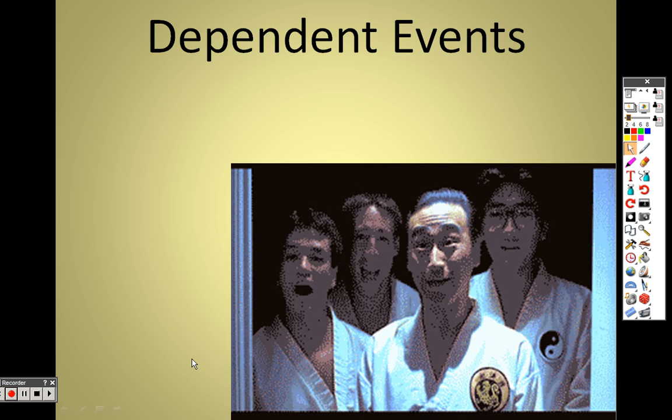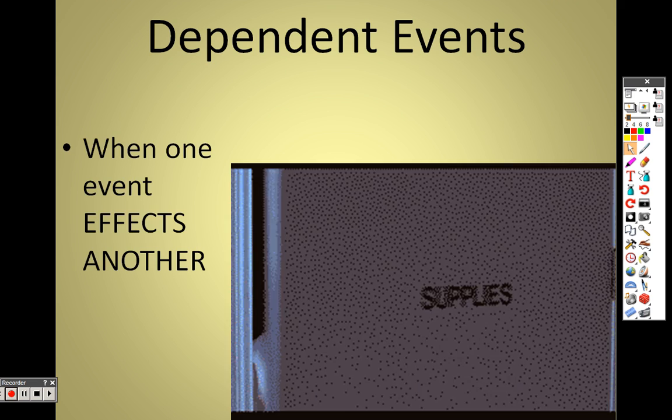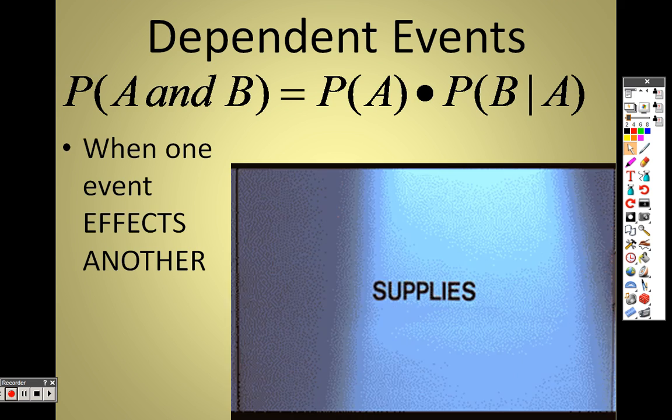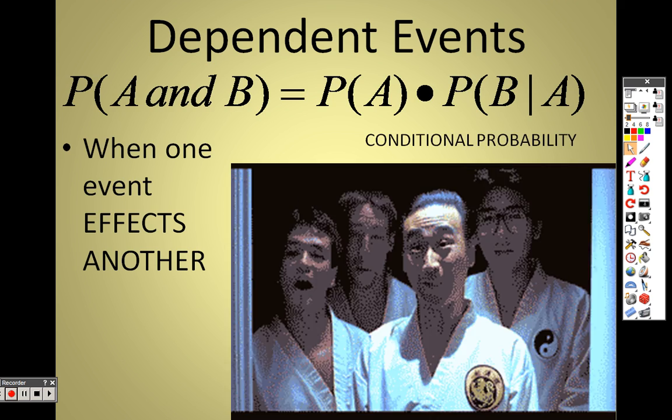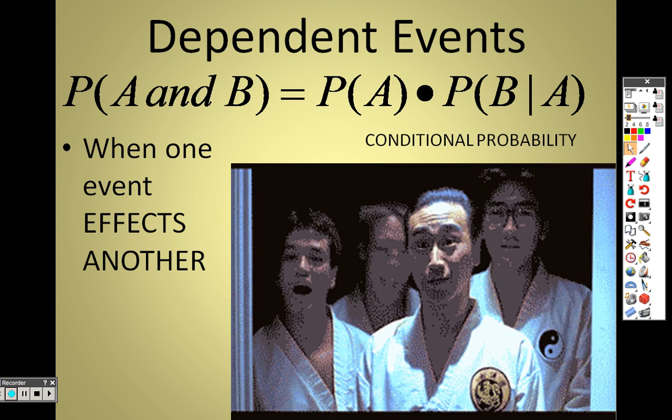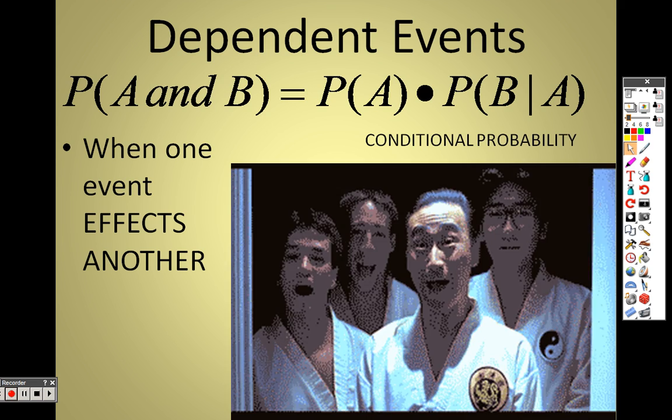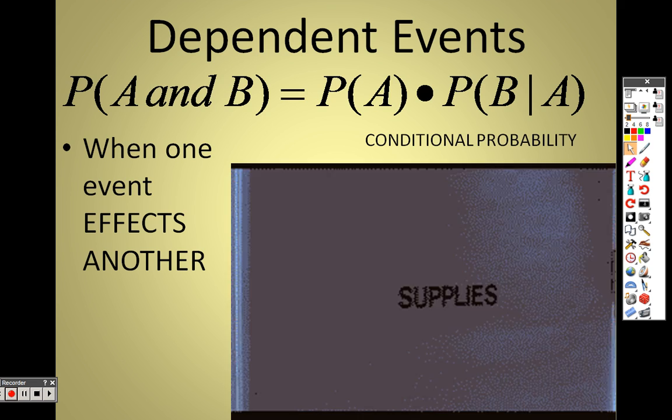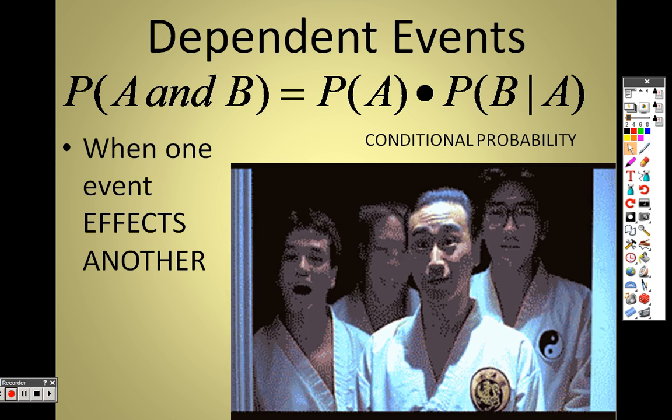Alright, so on 12.5, now we're on the dependent events, and that is when one event affects another, and that's where we get into this concept of conditional probability. That's why we have the probability of the first event times the probability of the second event happening, but it depends on whatever the first event was.